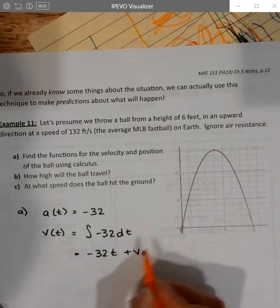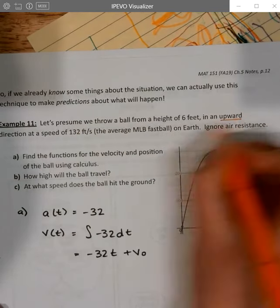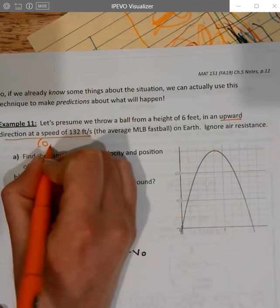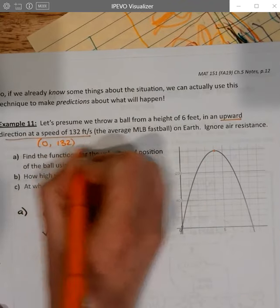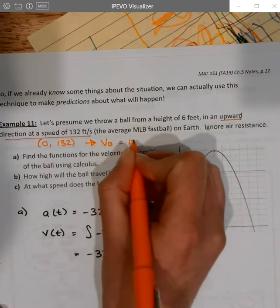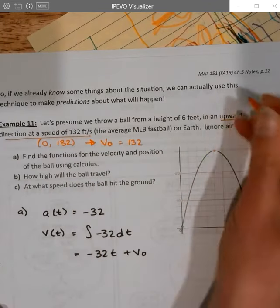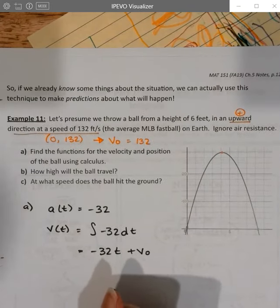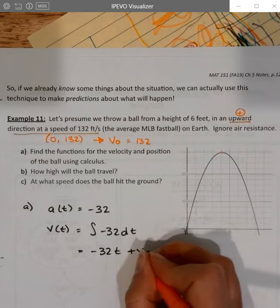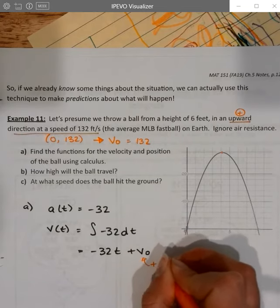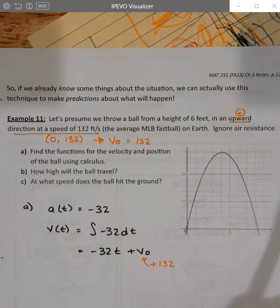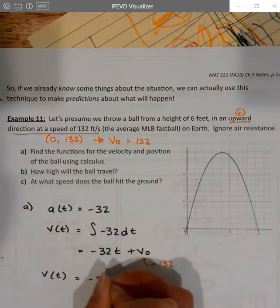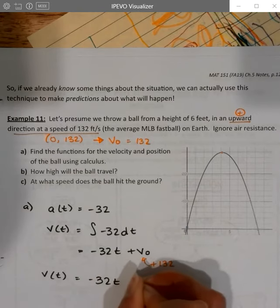Then my velocity function will be the integral of negative 32 dt, and so that is negative 32t plus v-naught. Now they told me v-naught because they told me that I threw this upward with a speed of 132. So that's the initial, that's 0, 132. Make sure you note that we're throwing it upward, so our velocity is positive. If we threw it downward, we'd have a negative. So I know the value for v-naught right here. It is a positive 132. So that allows me to finish the velocity function with its initial condition. So the velocity function is negative 32t plus 132.